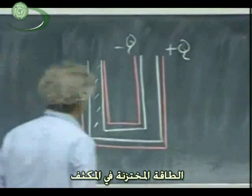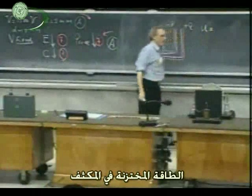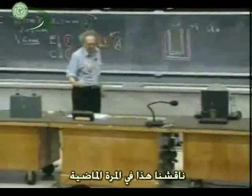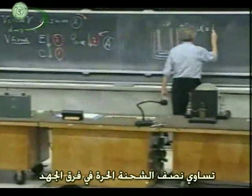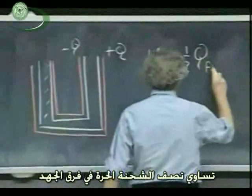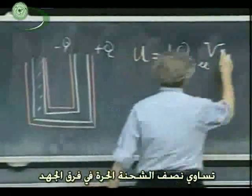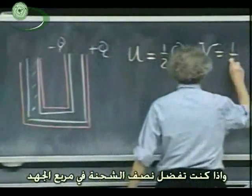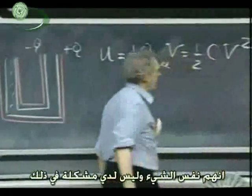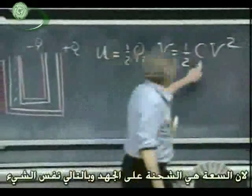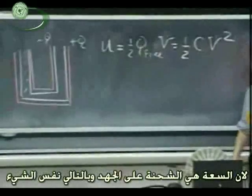The energy stored in a capacitor equals one-half times the free charge times the potential difference. If you prefer one-half CV squared, that's the same thing, because C is Q divided by V.